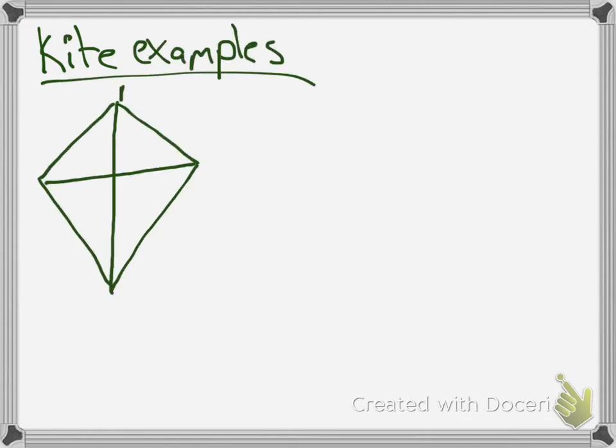Anyways, last example. Let's look at some kite examples, shall we? We shall. Okie dokie. So here's a kite. And I tell you, okay, here's two diagonals. Find, say, AB.